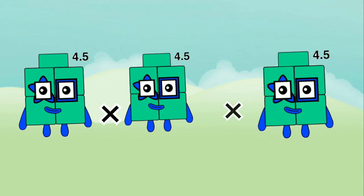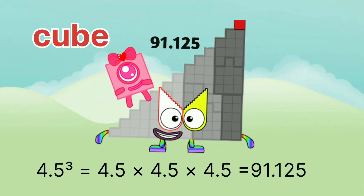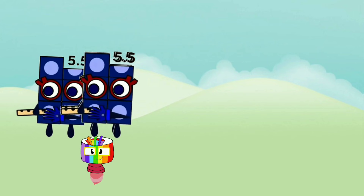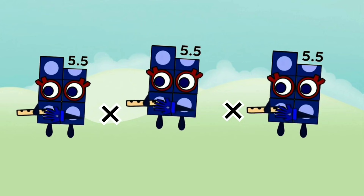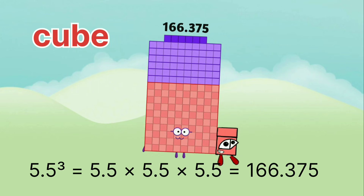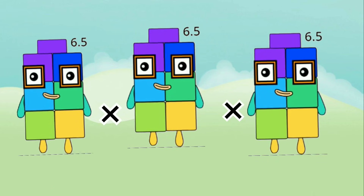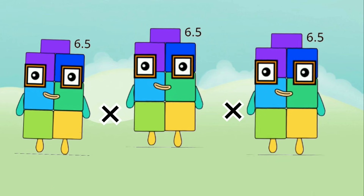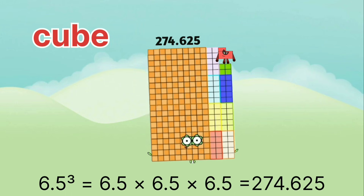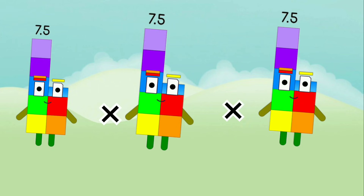4.5 x 4.5 x 4.5 equals 91.125. 5.5 x 5.5 x 5.5 equals 166.375. 6.5 x 6.5 x 6.5 equals 274.625.